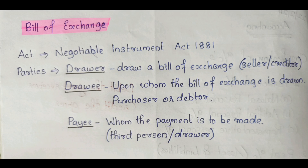In this class we covered six topics. First, bill of exchange — a negotiable instrument with three parties: drawer, drawee, and payee.